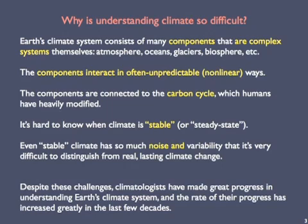The components include the atmosphere, the oceans, glaciers, the biosphere, and many others. A change that affects one of these components doesn't produce easily predictable changes in the other components — we formally call this non-linear behavior. The climate system is intimately linked to the carbon cycle, which has been and continues to be heavily modified by humans via the burning of fossil fuels like coal and oil. So the climate system is even more of a moving target in terms of our understanding it.